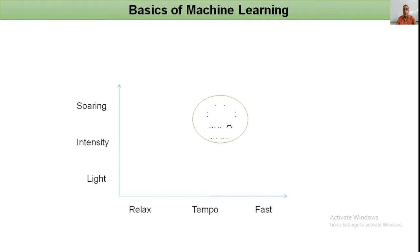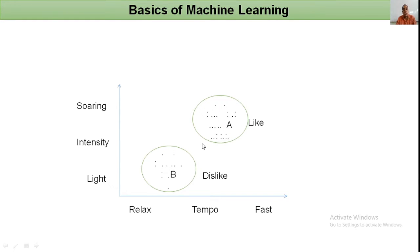If we collect the previous data of the person's liking and disliking of songs and draw the graph, we get data points. Points in group A represent songs with fast tempo and soaring intensity — songs that person likes. Points in group B represent songs with relaxed tempo and light intensity — songs that person dislikes. If a new song falls near group A, we can identify it as a liked song; if near group B, a disliked song. But if the point falls in the middle, we cannot easily predict.